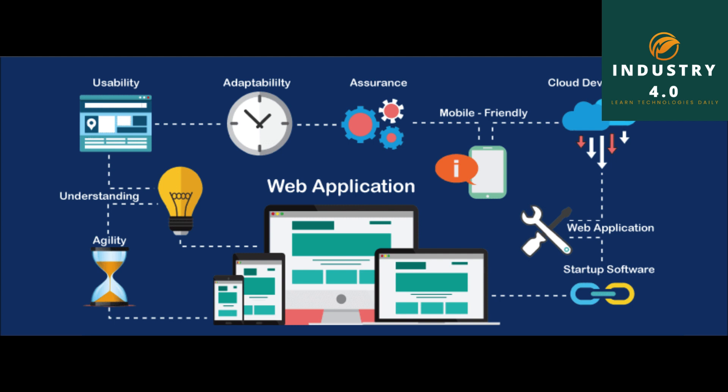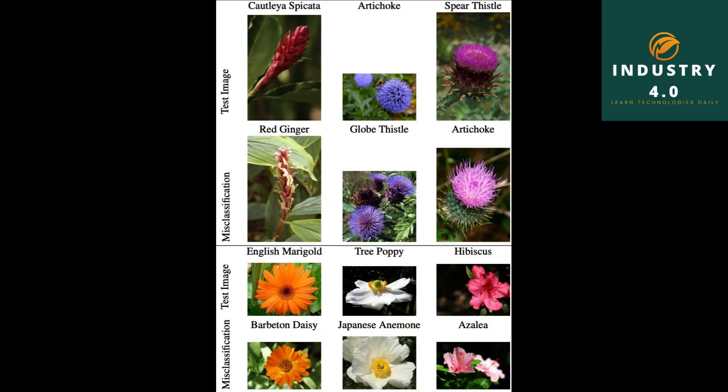Step 7 - Web Application: Finally, the developed model was deployed into a web application, which further makes the system more user-friendly. A subset of the Oxford 102 Flowers dataset is used for training the CNN model. The original dataset consists of 102 classes with 40 to 200 images of each flower. Out of this, a subclass of 24 flowers with 150 images of each class is used to train the model. An equal number of images of each class are given to implement unbiased training.